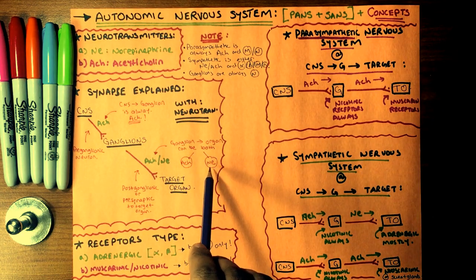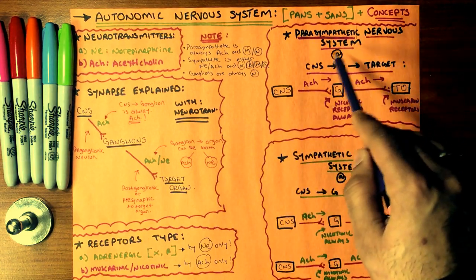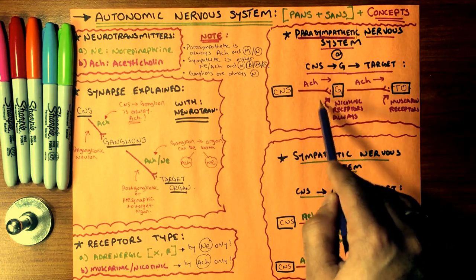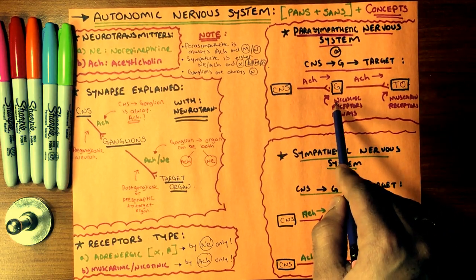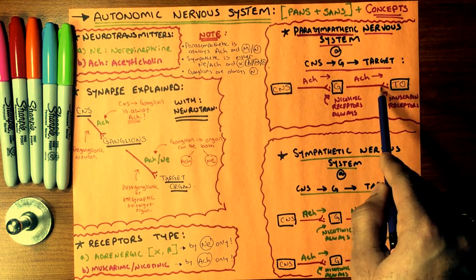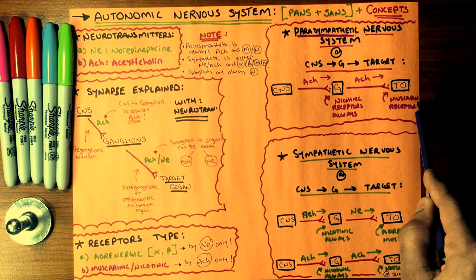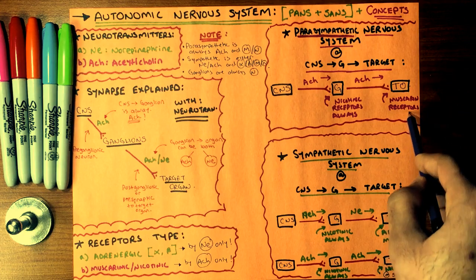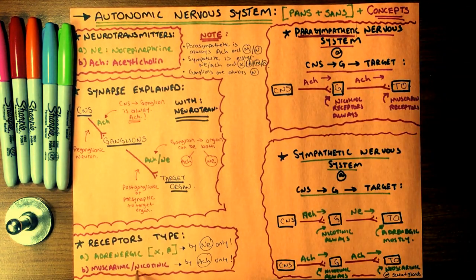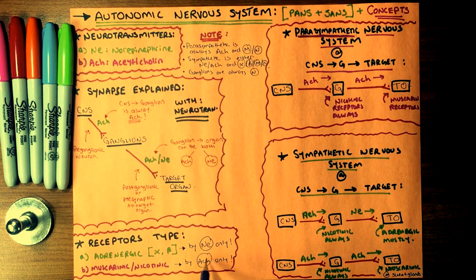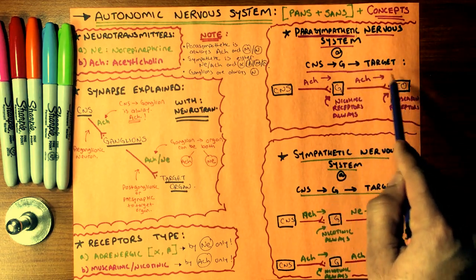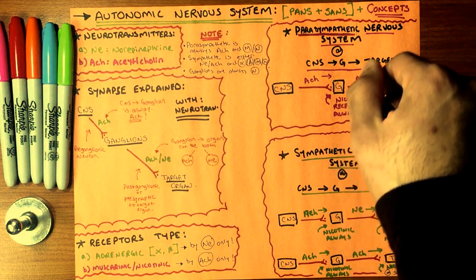In the parasympathetic nervous system, the central nervous system releases acetylcholine in the preganglionic neuron, which arrives at the ganglion and is received by nicotinic receptors. Acetylcholine then travels through the postganglionic neuron to the target organs and is accepted by muscarinic receptors. It is important to note that all ganglionic receptors will always be nicotinic and mediated by acetylcholine. In the parasympathetic, the postganglionic neuron will always use acetylcholine — never norepinephrine.